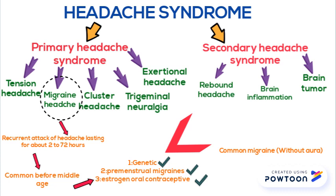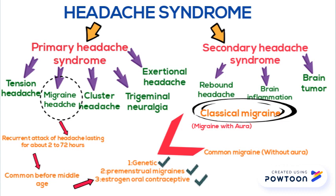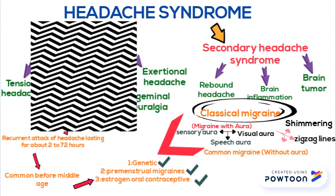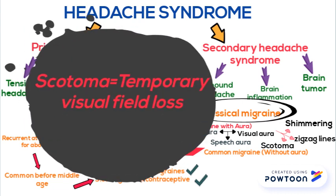Migraine is of 2 types: Common Migraine Without Aura and Classical Migraine. Classical Migraine is also called Migraine with Aura, and Aura is of 3 types: Sensory Aura, Speech Aura, and Visual Aura. Visual Aura is the most common and is further divided into appearance of shimmering, appearance of Zig Zag lines in front of the eyes, and Scotoma, which is basically Temporary Visual Field Loss.